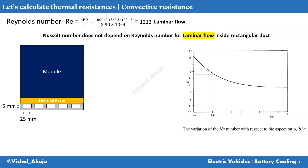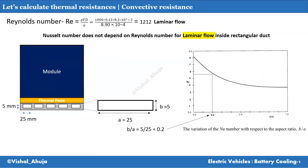Instead, it follows a pattern with respect to the aspect ratio. For a single channel with an aspect ratio of 0.2, from the graph we can see the corresponding Nusselt number comes out to be about 0.5. From this Nusselt number, if you calculate the heat transfer coefficient, it comes out to 397 W/m²·K. You can pause and check the calculations from the basic equation.